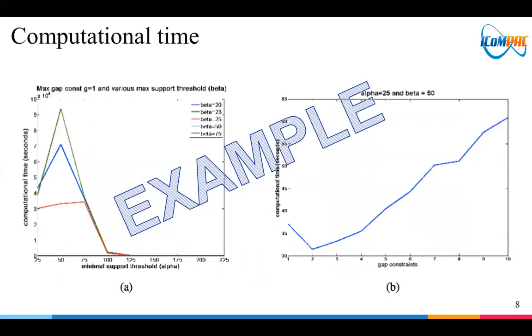As the gap constraint is more than two, then the computational time is more expensive because of the gap checking for each activity when there is no minimal pattern can be found.